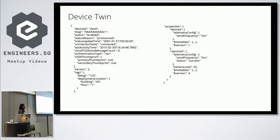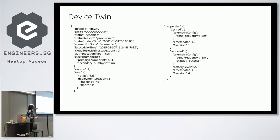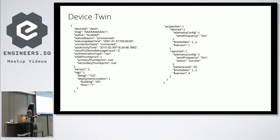This is a JSON representation of a device twin. There are a couple of interesting things: tags are information the device doesn't necessarily care about but help you identify which physical device you're talking to. Then there are the desired and reported properties we discussed. This is a sample representation showing how frequency or other data might be modeled in a device twin.